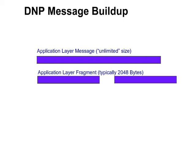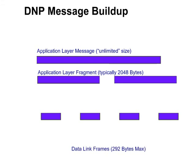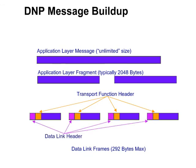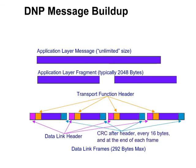Each fragment is broken into smaller frames. The transport function header is prepended to each frame, and the data link layer header is added. CRC bytes are included after the data link header, after each 16 bytes of the message, and at the end of each frame.